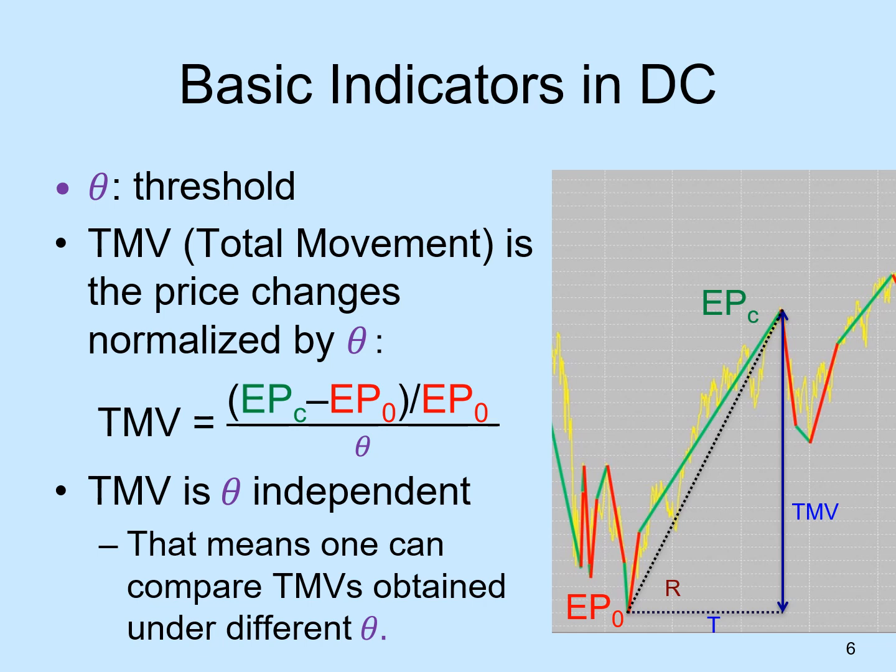Apart from TMV, two other indicators are also important to this research. The first is called T, which measures the time it takes to complete the trend. The second is called R, a return, which is TMV divided by T.